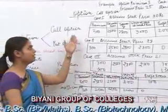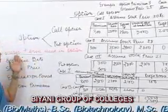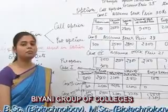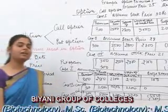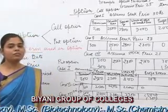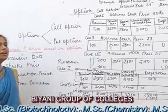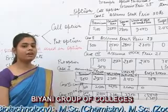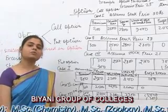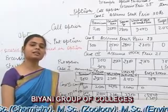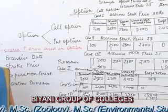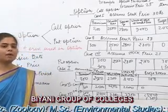Before a detailed discussion on both topics, it is important to understand the key terms used in options. First is exercise date — the date at which the contract matures. Second is strike price — the price at which the buyer and seller agree to buy or sell the goods at the time of entering the contract. Third is expiration period — the period in which we can exercise our options. There are two types: American option, which can be exercised any time during the year, and European option, which can only be exercised on the maturity date. Last is option premium — the cost of the option, paid by the buyer.